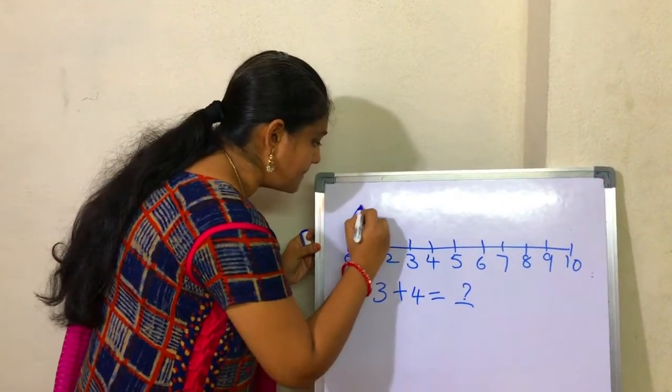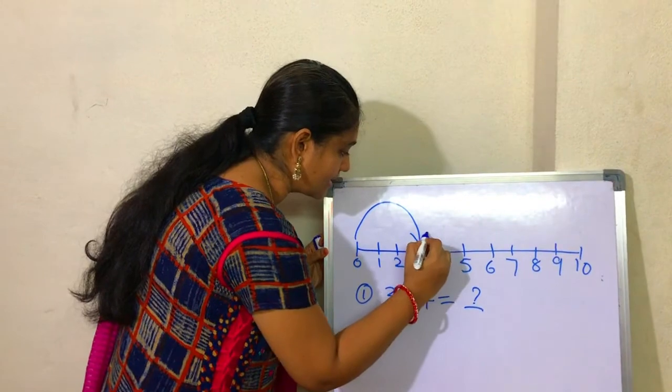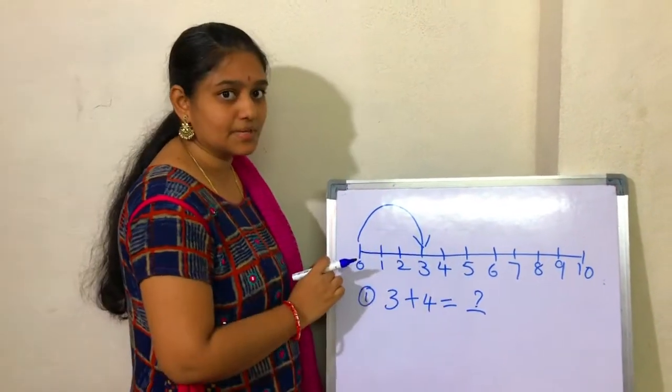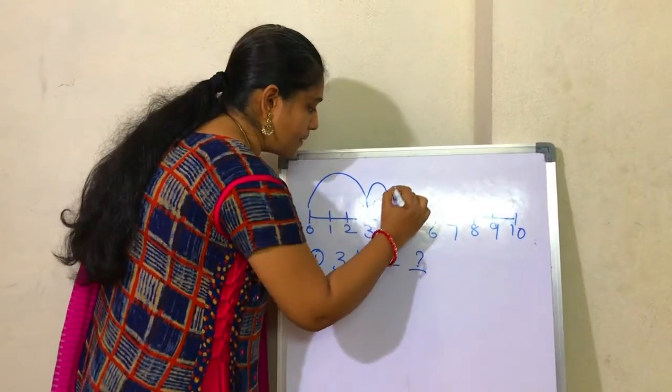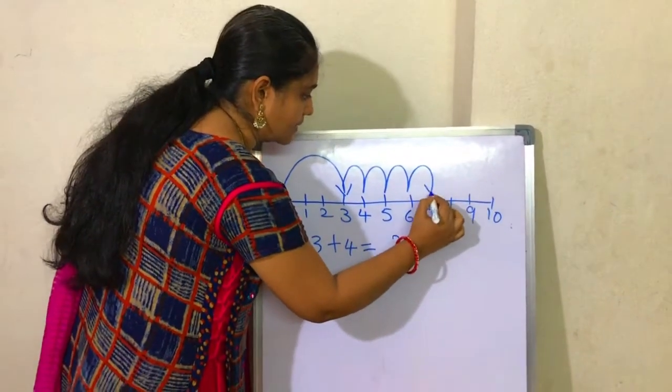We start from 3. Now tell me, what is the next number? 4. Now, jump 4 numbers to the right.